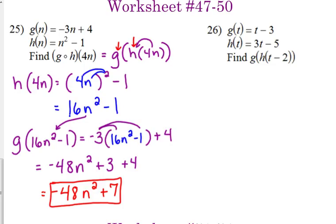All right. Let's do 26. We start with the inside there. We're going to start with h of t minus 2. So in our h function, where we see the variable, we leave ourselves a space with parentheses, and we plug in t minus 2 there.